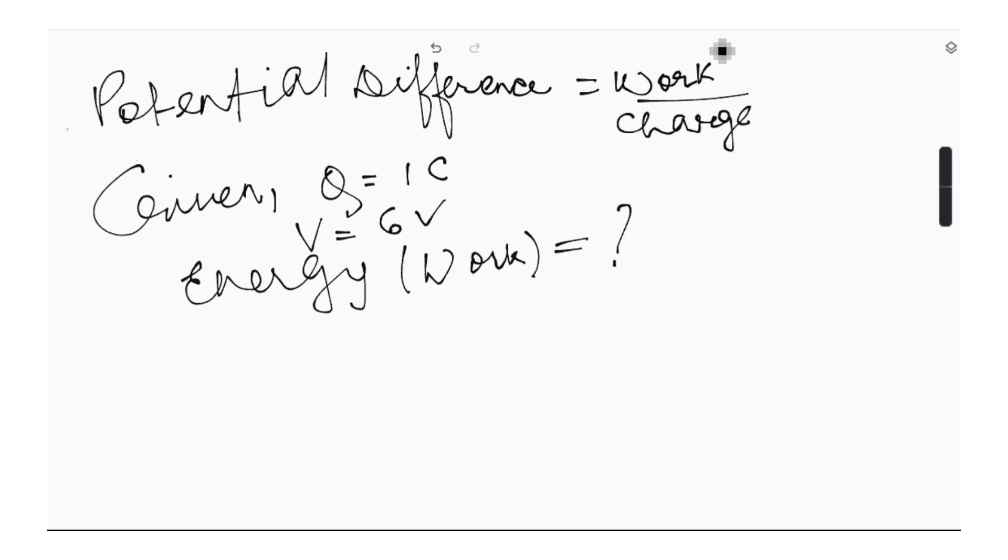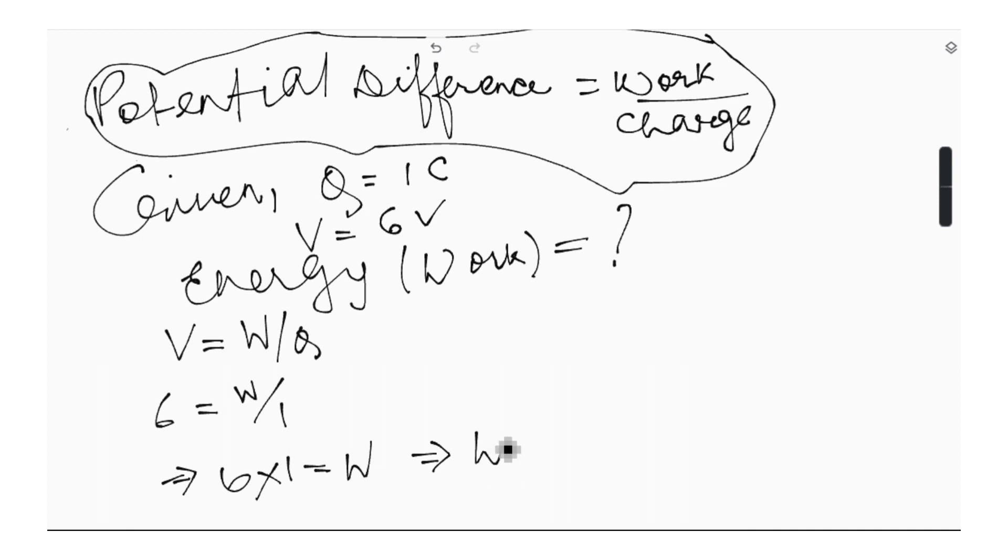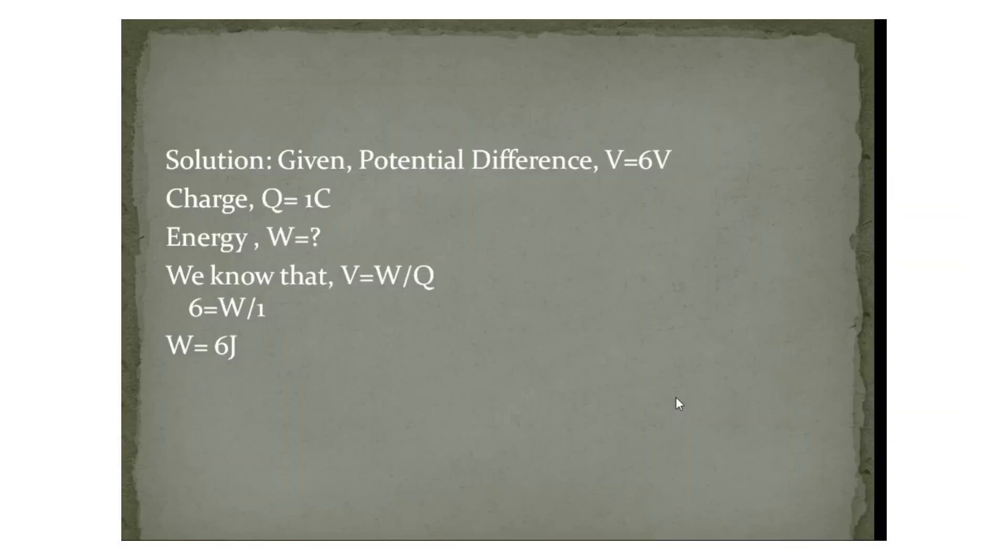So we have learned that potential difference is actually work by charge, right? V equals W by Q. Now what is V? 6. Energy or work we have to find out, and Q is 1. So 6 into 1 equals W. So how much is work done? Work done is 6 joules. What is the unit of work? The SI unit of work done is joules. So work done or energy is 6 joules. Students, I hope you understood the solution to Problem Number 2. You can pause the video and note down the steps of the solution from here.